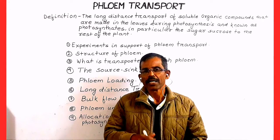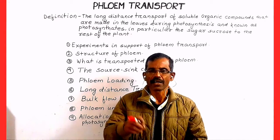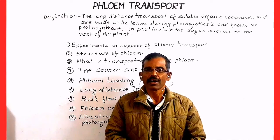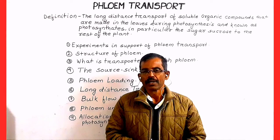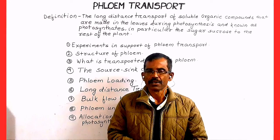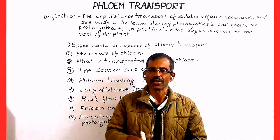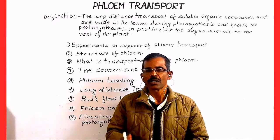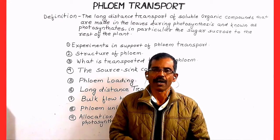The main function of root is to provide anchorage and to absorb water and minerals from the soil. Leaves are the principal photosynthetic organ. They are also involved in gas exchange due to the presence of numerous microscopic pores known as stomata.